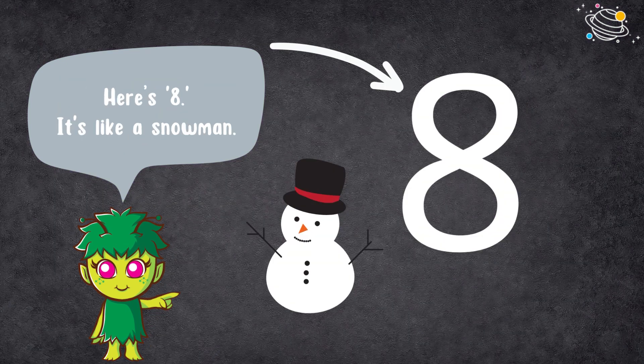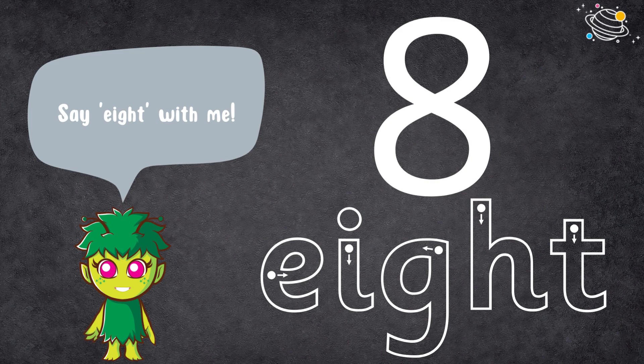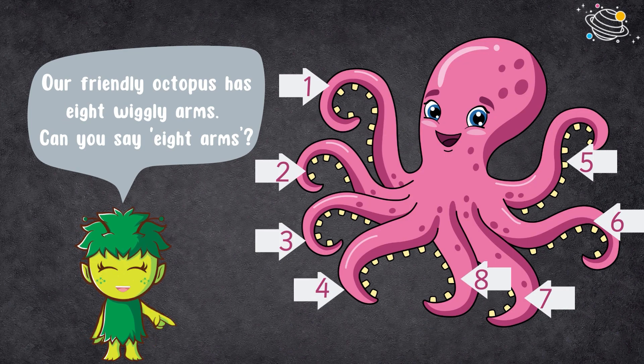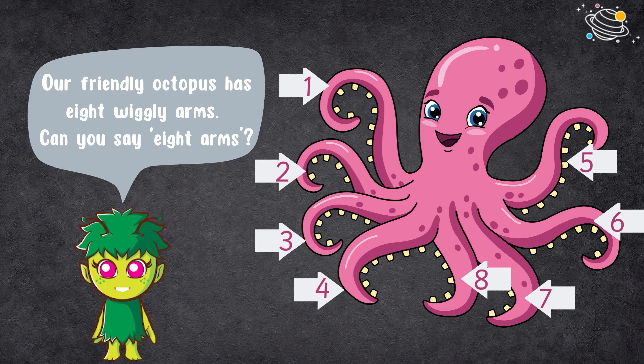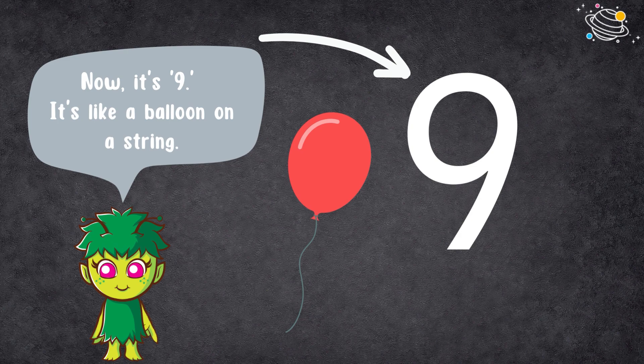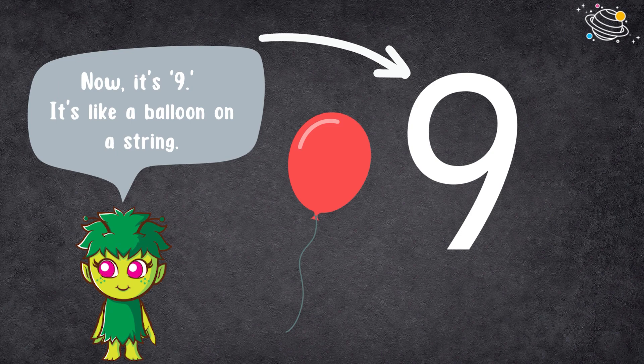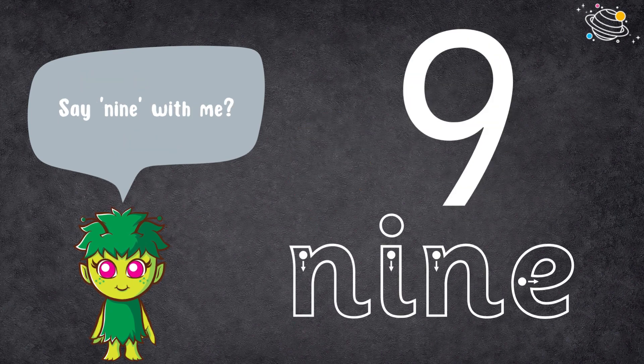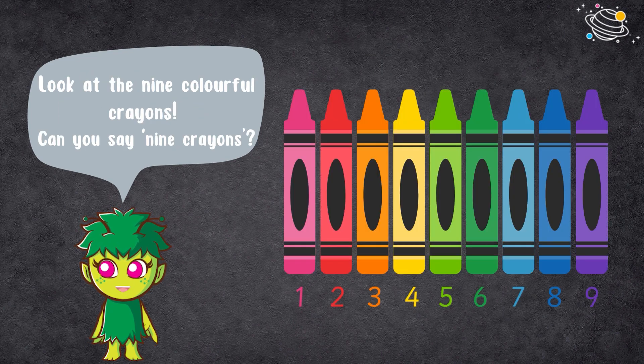Here's eight. It's like a snowman. Say eight with me. Our friendly octopus has eight wiggly arms. Can you say eight arms? Now it's nine. It's like a balloon on a string. Say nine with me. Look at the nine